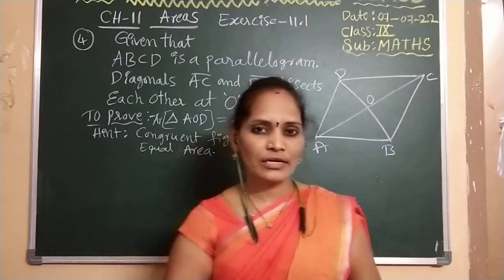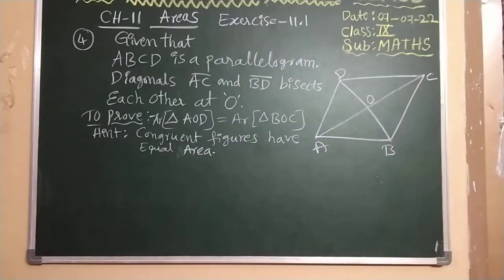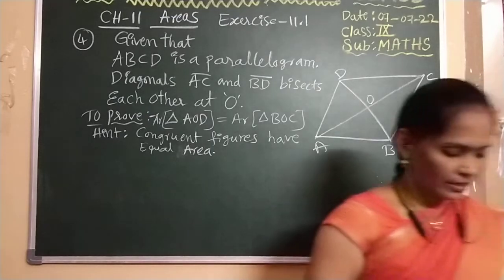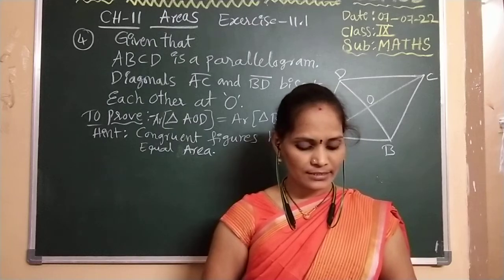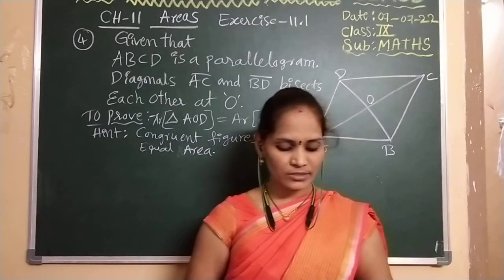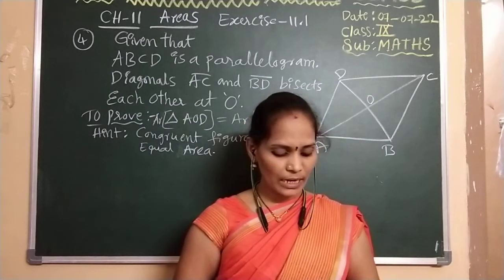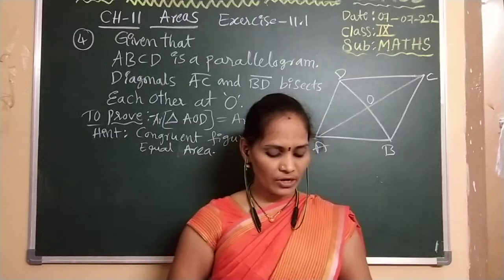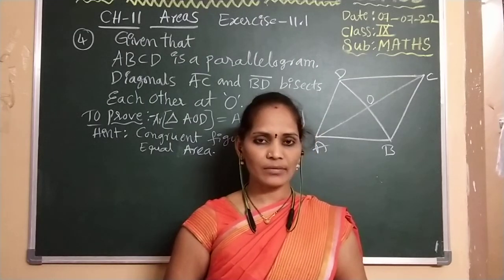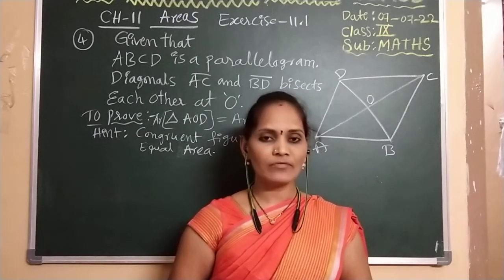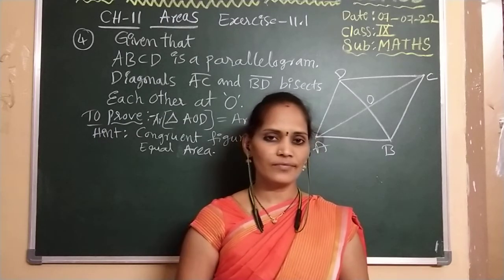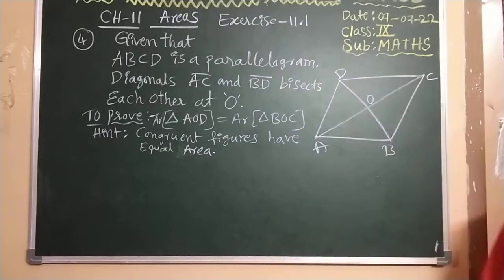Just let me read the question before that. Here, see in your textbook: given ABCD is a parallelogram. The diagonals AC and BD intersect each other at O. Prove that area of triangle AOD is equal to area of triangle BOC. The hint given is that congruent figures have equal area.